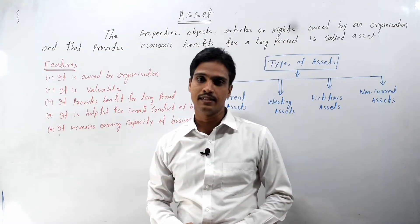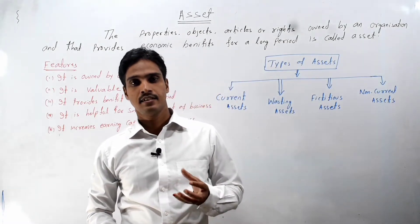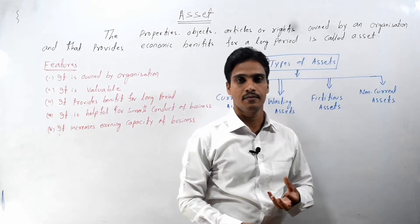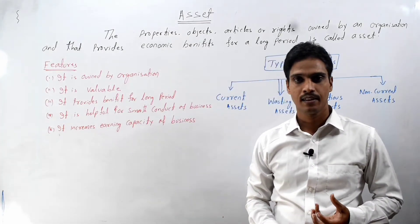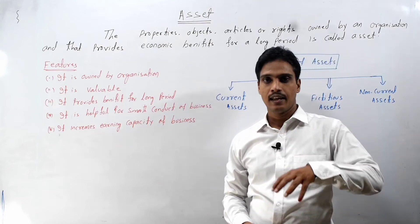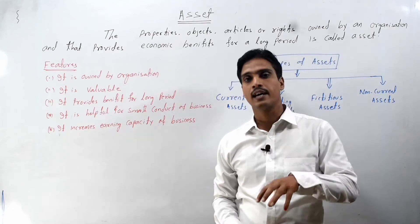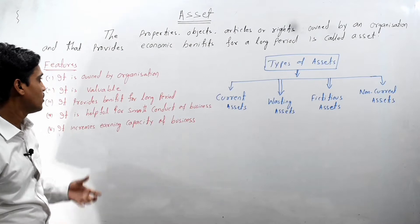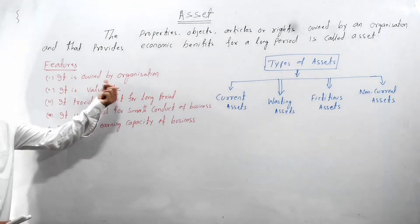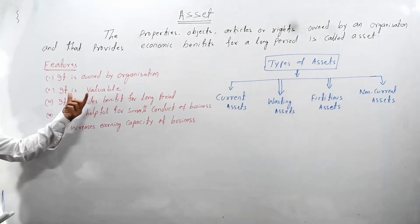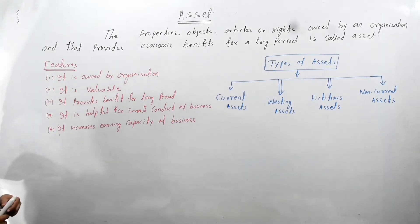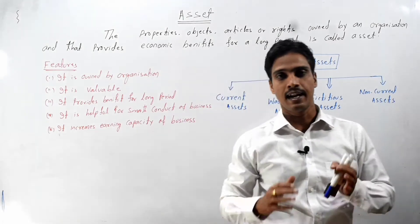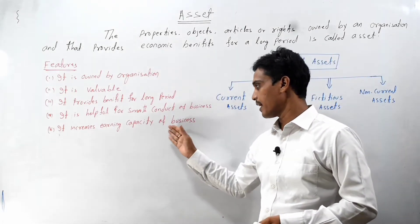So, asset means the properties, the objects, the articles, or any rights that are owned by an organization and that provide economic benefit to the organization for a long period. Its features are: generally it is owned by an organization, it is valuable for the organization, and it provides benefit for a long period. It also increases the earning capacity of a business.